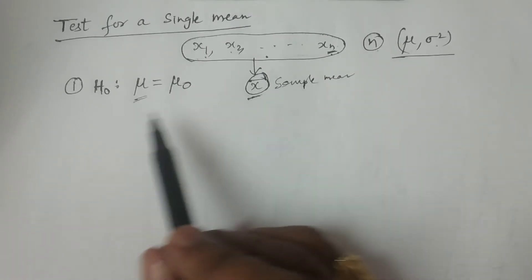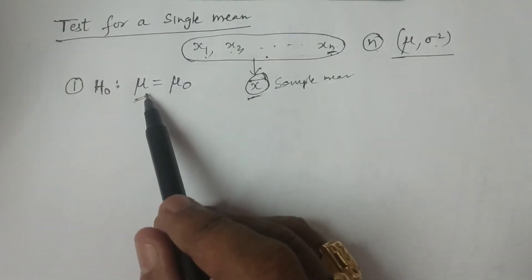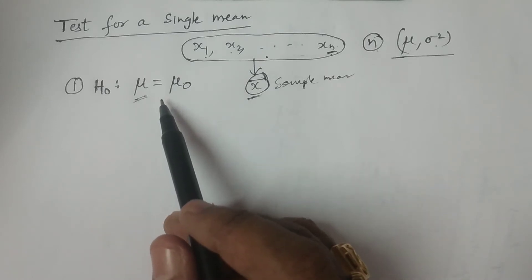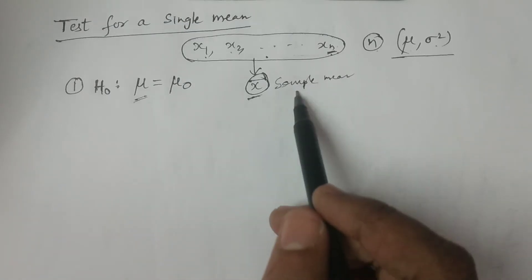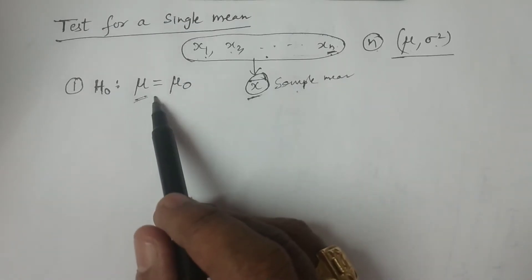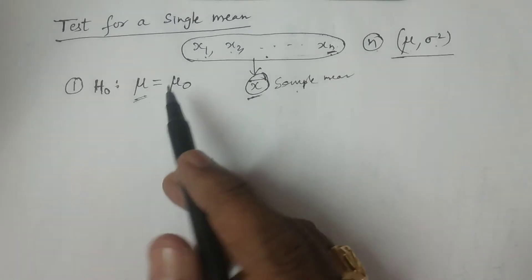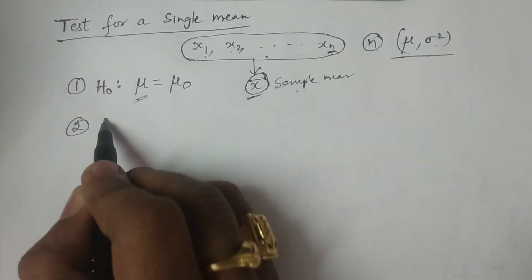So if you consider this is the population mean mu, we can set up another kind of hypothesis: there is no significant difference between the sample mean and the population mean. That is also a statement we can give. That is the first point.